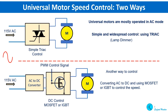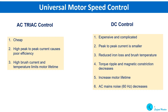One way of controlling the speed is to use a simple lamp dimmer, which uses a semiconductor device called a TRIAC. The other way is to convert from AC to DC first, and then using a power semiconductor device — either a MOSFET or IGBT — control the speed of the motor. A PWM signal, or pulse width modulated signal, is applied to the gate. There are advantages and disadvantages to both control circuits.